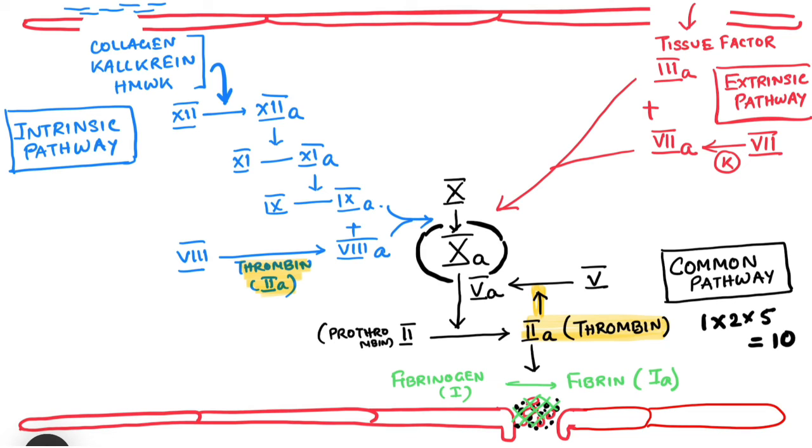That means, factor 1, then factor 2, factor 5, factor 10. These are the main figures or players in our common pathway. Just see over here, factor 1, factor 2, factor 5, and factor 10.